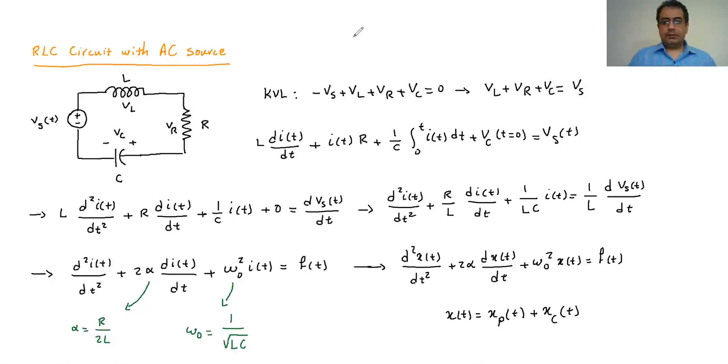There's also the F(t). The F(t) is basically one over L dVS(t) over dt. So generally we can write it here. And as I said, X represents either I or V.